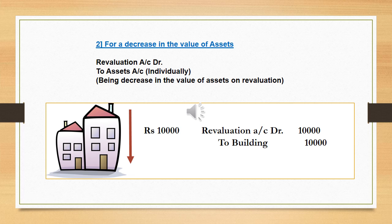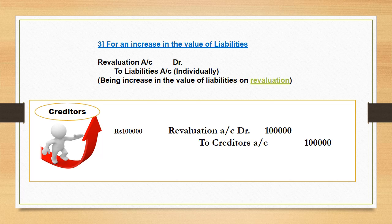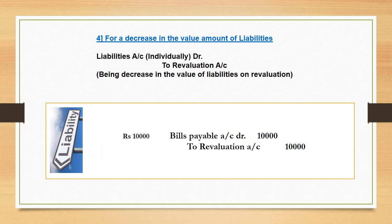Situation three: when there is an increase in the value of a liability. Whenever there is an increase in the value of a liability, it will be termed as a loss, so revaluation account must be debited, and the liability must be credited. For example, creditors' value increases by rupees 1 lakh. Entry is: Revaluation Account debit by rupees 1 lakh, to Creditors Account credit by rupees 1 lakh. Increase in creditors is an increase in liability, which is a loss for us.